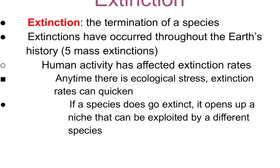Extinction happens when there is a termination of a species. Extinctions have occurred throughout Earth's history — there have actually been five mass extinctions on record. Human activity has drastically affected extinction rates, so anytime there is ecological stress, extinction rates go up and things happen quickly. If a species goes extinct, it opens up a new niche that can be exploited by a different species.